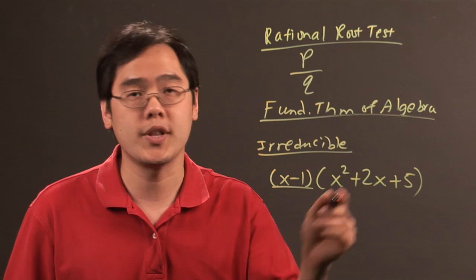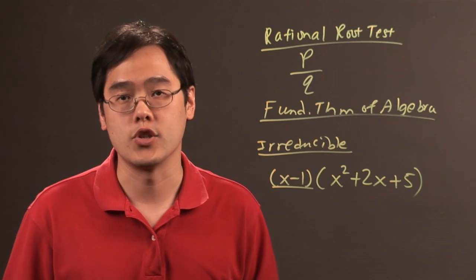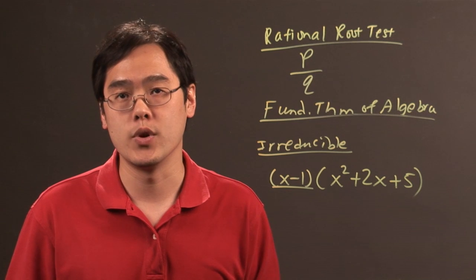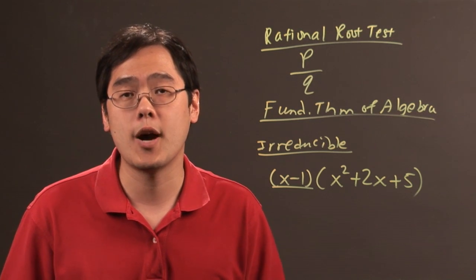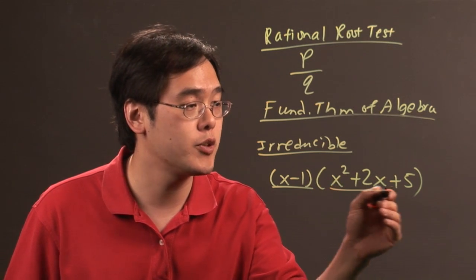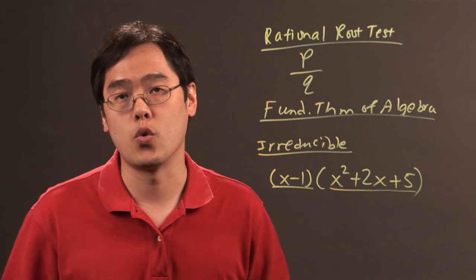Because what that means is if you were to break this polynomial down further, it will actually give you complex solutions. Irreducible over the reals says you want to write it in its final form before having to go into complex form. So this is the best polynomial you can write before it becomes no longer a real polynomial.